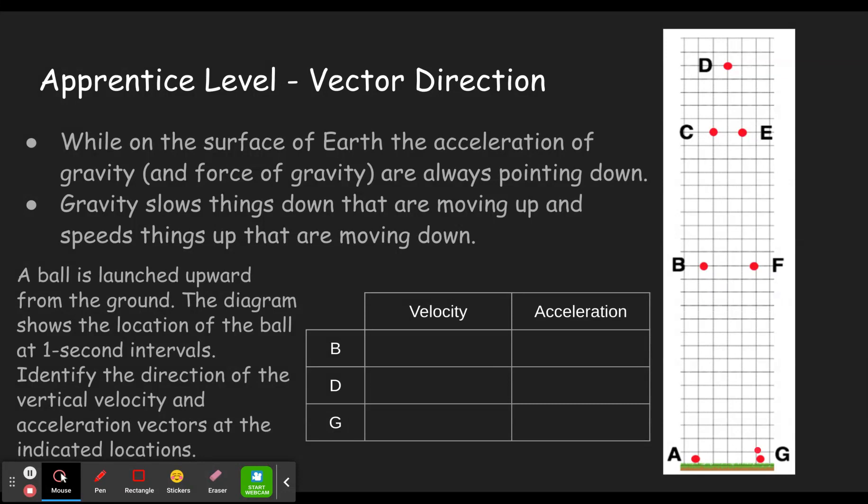In this case, you're just recognizing, is it moving up? Is it not moving at all? Or is it moving down? And so in this case at B, it is still on its way up, so the velocity would be up. The acceleration, well, what did we learn? The acceleration is always pointing down. So down.